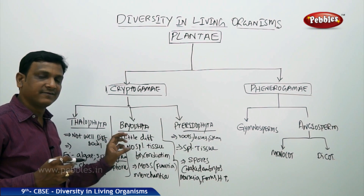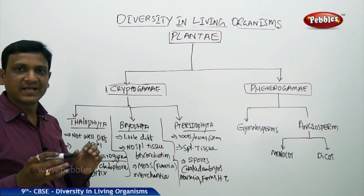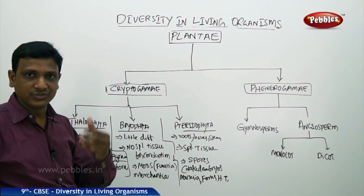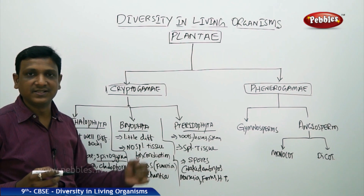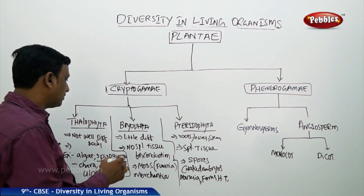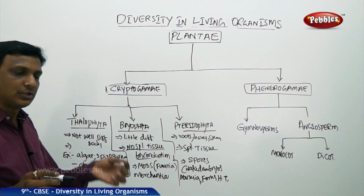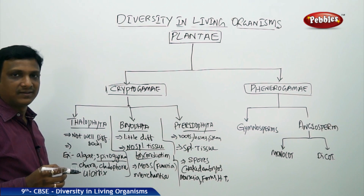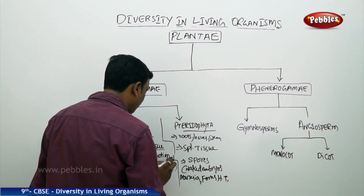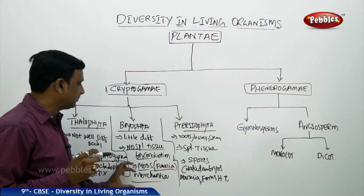The next group is Bryophyta. In Bryophyta there is a little differentiation in the body — not like Thallophyta, they have some distinction. But they do not have actual special tissues for conduction. Bigger plants have xylem and phloem tissues for conduction of water and mineral salts, as we studied in the chapter on tissues. Such special tissues are not found in Bryophyta. They look like tiny plantlets. Examples are moss, Funaria (commonly called moss), and Marchantia.